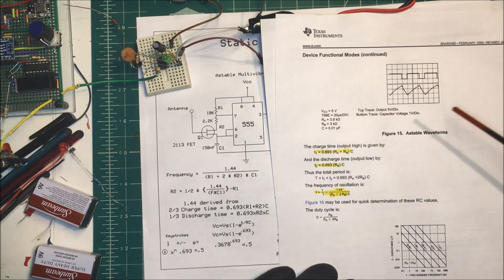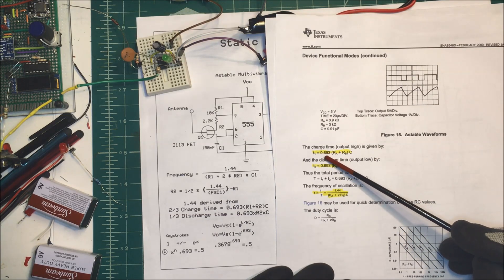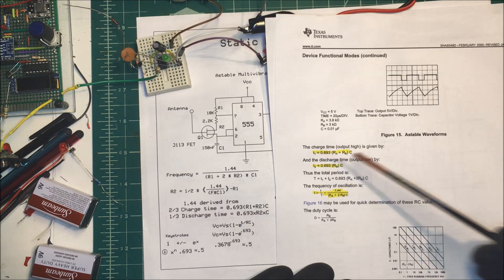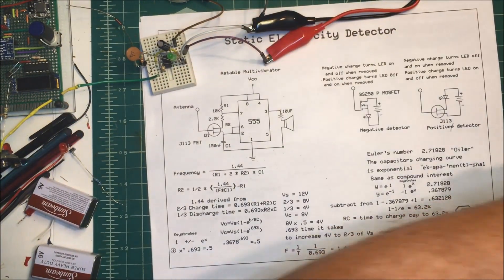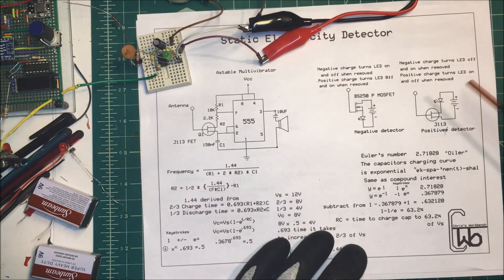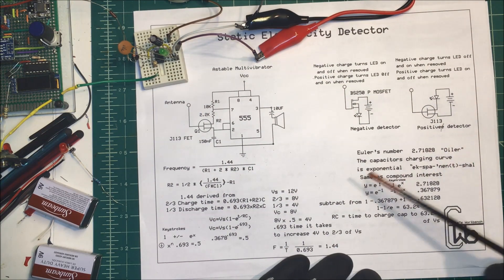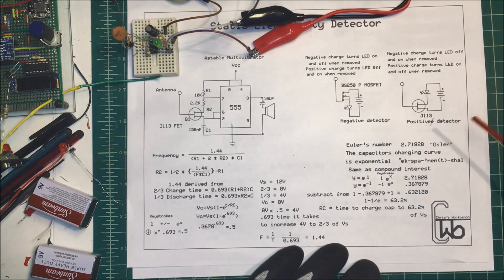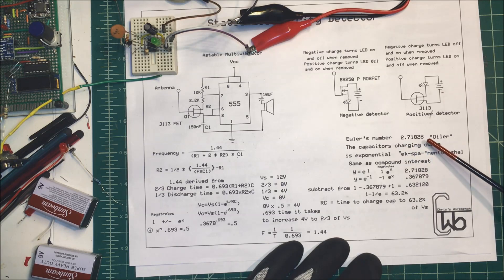Of this 555 timer. And so I was wondering why 0.693. Now we know that 0.63 or 63% of the—that's our RC time constant and that starts with the Euler's formula here: e = 2.71828.